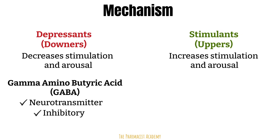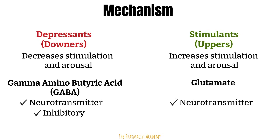In order for a substance to cause a stimulant effect, they usually work on glutamate. Glutamate is also a neurotransmitter. When it binds to glutamate receptors, it leads to excitatory messages being released, leading to more stimulation.